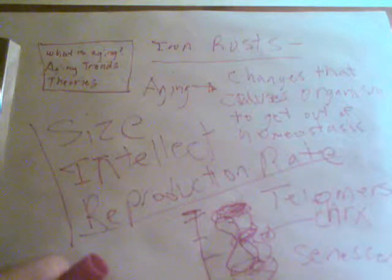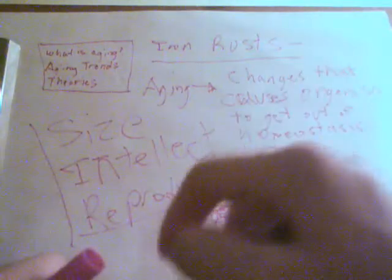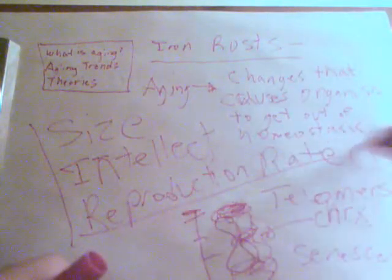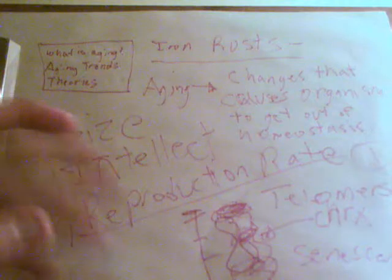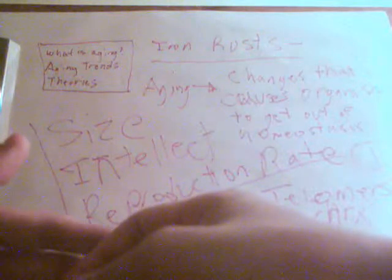A cell that doesn't stop dividing may cause cancer, which is just rapid uncontrolled cell division. There's some controversy with the telomere theory though, because flies have huge telomeres but still have a short lifespan, so there are other factors beyond telomeres. You can now buy telomerase — the enzyme that lengthens telomeres — on eBay for about $500 for a three-month supply, but I wouldn't hold my breath that it will significantly increase your lifespan.